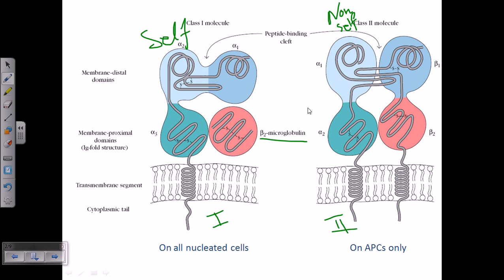Inside our chromosomes, MHC genes are placed at specific loci. During zygote formation, we get one copy from our father and one copy from our mother. For Class 1 we have more than one locus, and for Class 2 we also have more than one locus. Having more than one locus with two different allele versions results in a variety of different Class 1 and Class 2 molecules inside a single cell.